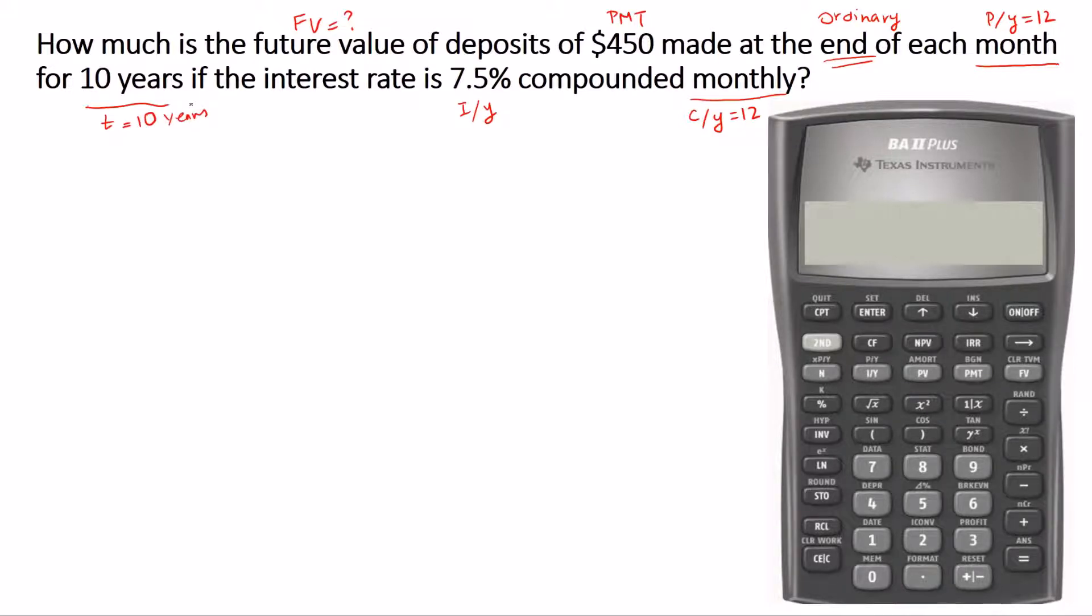Before we enter the values, as you know, we need to clear the TVM worksheet. We press second and we press FV. Clear TVM is a secondary function on FV key.